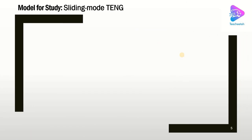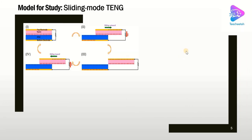In today's model, we are going to study one of the most important working modes of the TNG: the sliding mode. The sliding mode is based on the sliding of two dissimilar materials. For example, imagine we have nylon with positive electron affinity and PTFE (Teflon) with negative affinity. When they are in contact, charges are generated in positive and negative fashion. As they get separated, electrons are transferred between the backing electrodes. The TNG has an alternating output because the mechanical load is alternating.